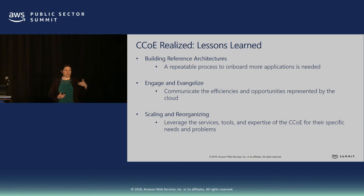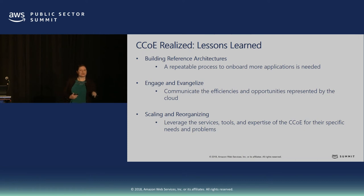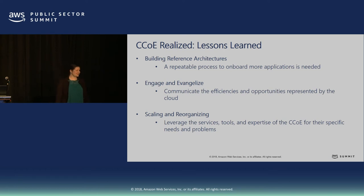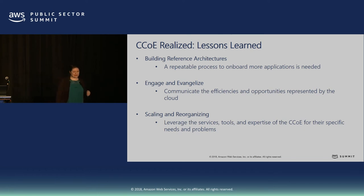Engage and evangelize — you've heard that word enough! It's central. Communicate, communicate, communicate — why are we doing this, what does it mean for you, and how does it better the organization as a whole? And finally, scale. Start small, build it up, learn the tools and services. AWS had over 1,400 releases last year, and there will be more this year. Start with minimal viable products and grow. Keep an eye on what service stack is coming and what new services will help your organization complete its mission.